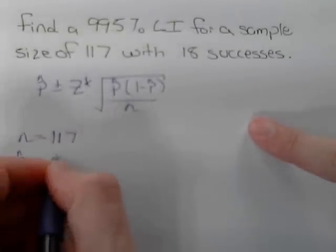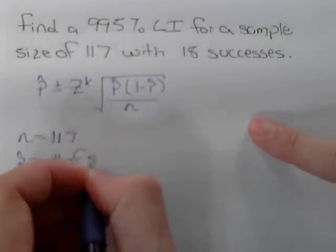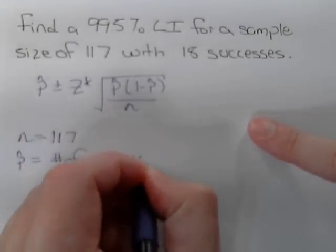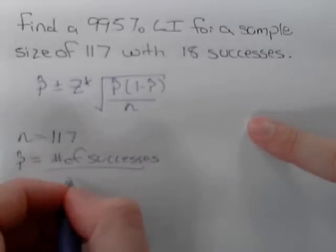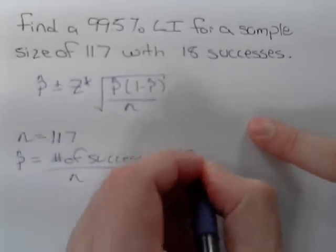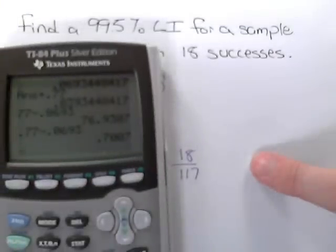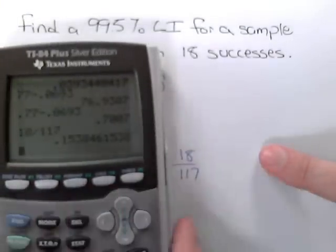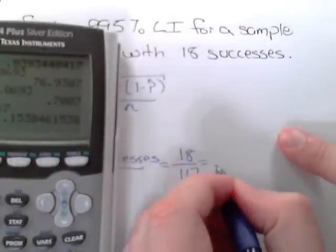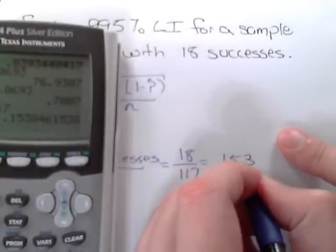We have the sample size n equals 117. P-hat equals the number of successes over the sample size, which in this case is 18 over 117. Rounding to four decimal places, 18 divided by 117 is 0.1538.